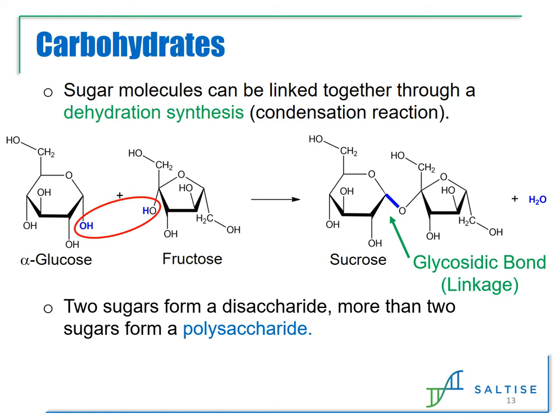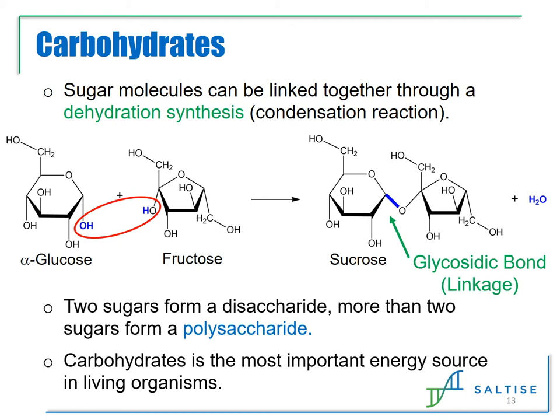When more than two sugars are linked together, the carbohydrate can be referred to as a polysaccharide. Carbohydrates are actually the most important energy source in living organisms and are the main fuel in the human body. When polysaccharides undergo a reverse reaction where water is added to the large biomolecule, the monosaccharides are released and distributed in the body, where they eventually undergo a biological process that releases the energy stored in their bonds.